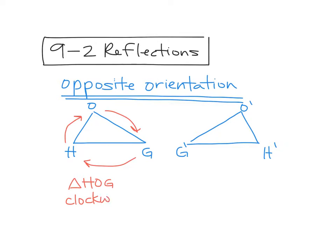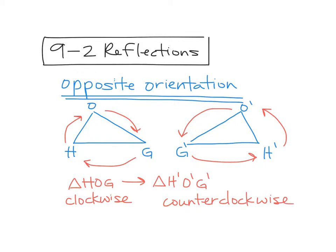Clockwise. Whereas if I were going to say triangle HOG maps onto triangle H prime O prime G prime, when I named that one, now I'm going counterclockwise to name it in that order. So if it goes from clockwise on the one to counterclockwise on the other or vice versa, then I know I have an opposite orientation. If I can name them both in the same direction, it's the same orientation. So a reflection will always have an opposite orientation every single time. That's how you can tell it's a reflection, is you name it clockwise for the one and counterclockwise for the other.